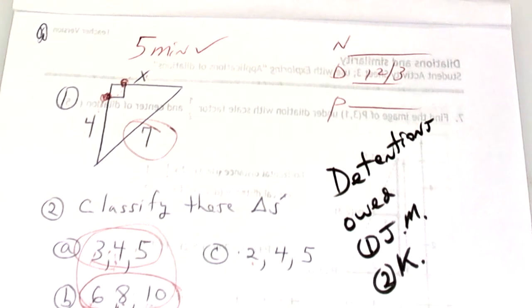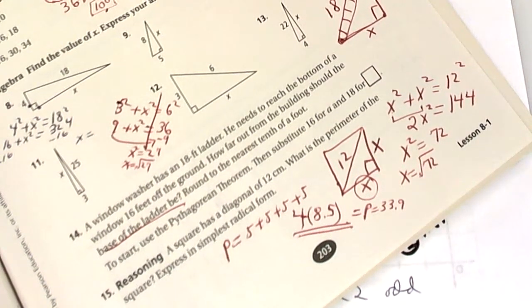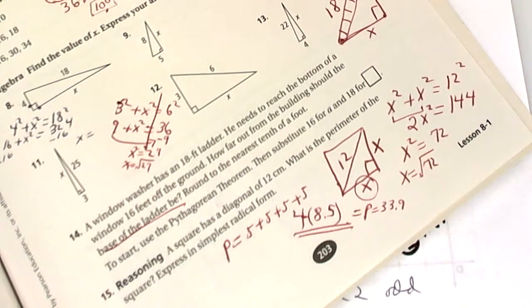of these word problems. Okay, if you look at number 14, it says a window washer has an 18-foot ladder. The ladder leans up against the building. He needs to reach the bottom of a window. The window is 16 feet high. How far from the building should the base of the ladder be? Whenever they say